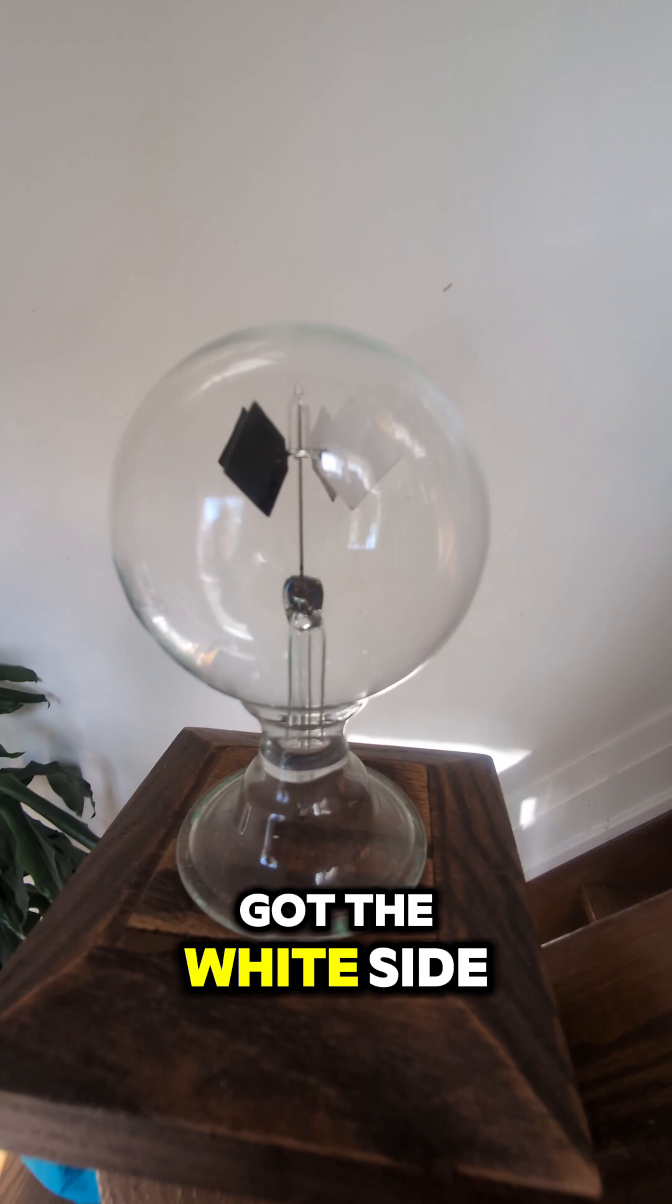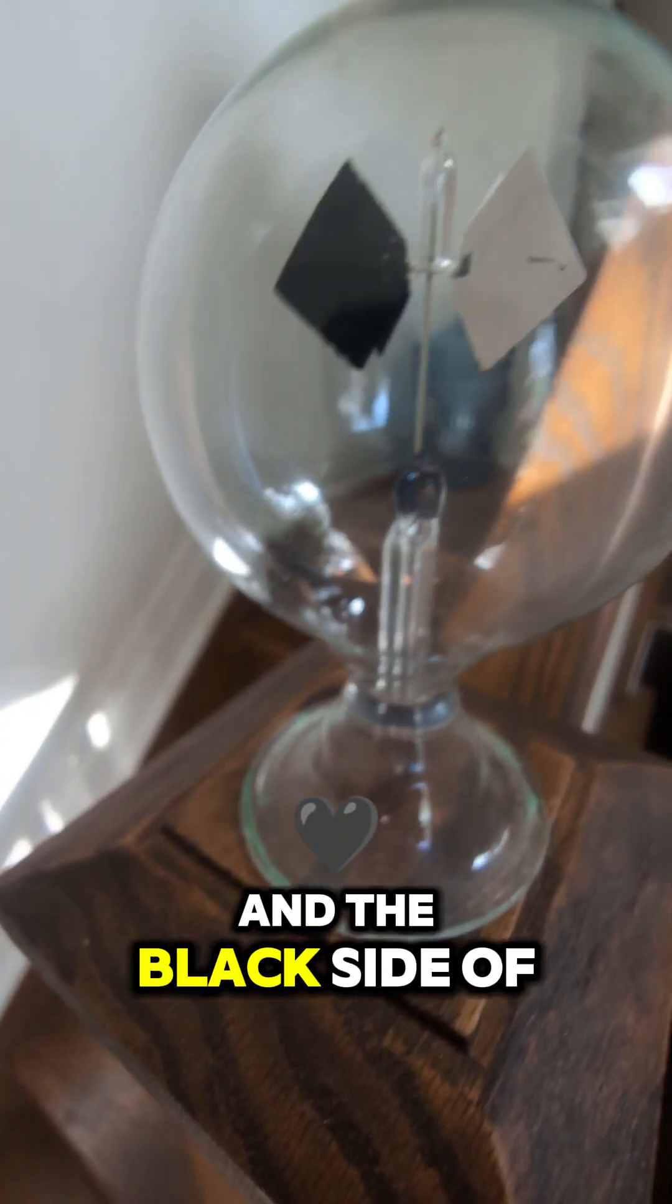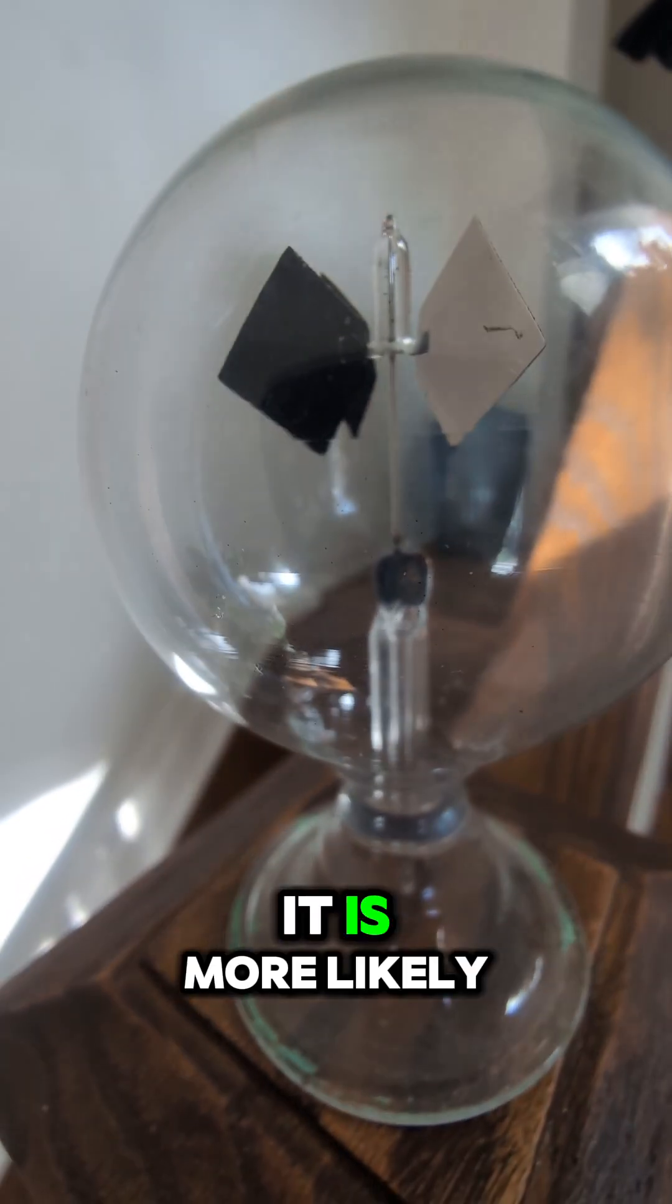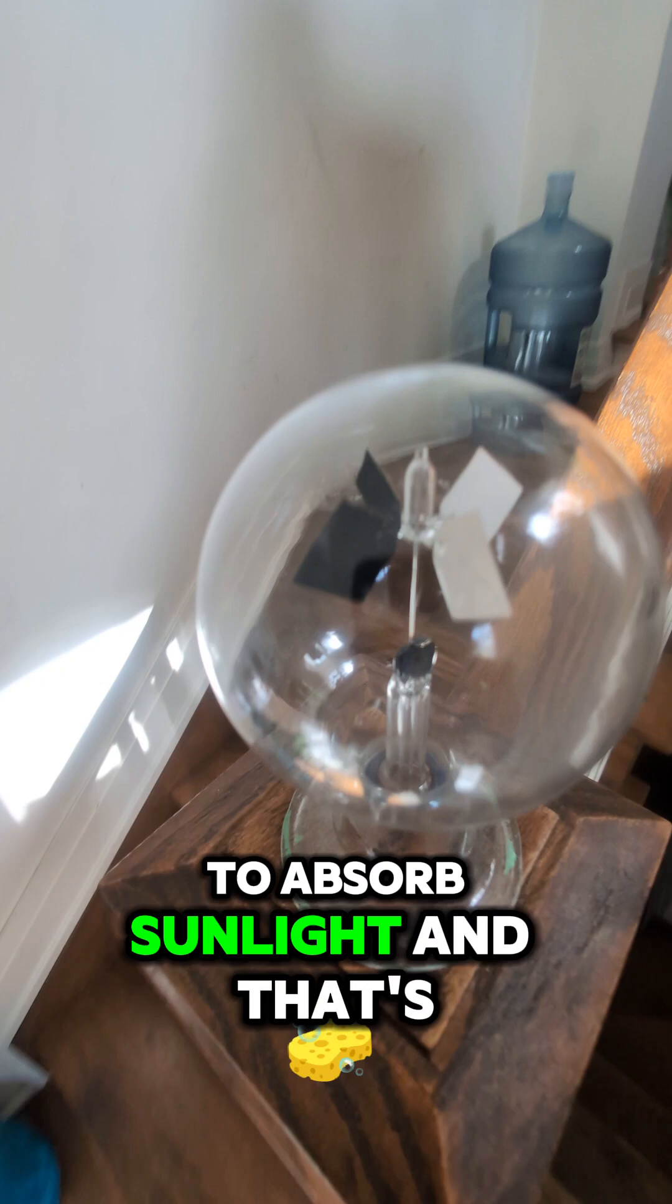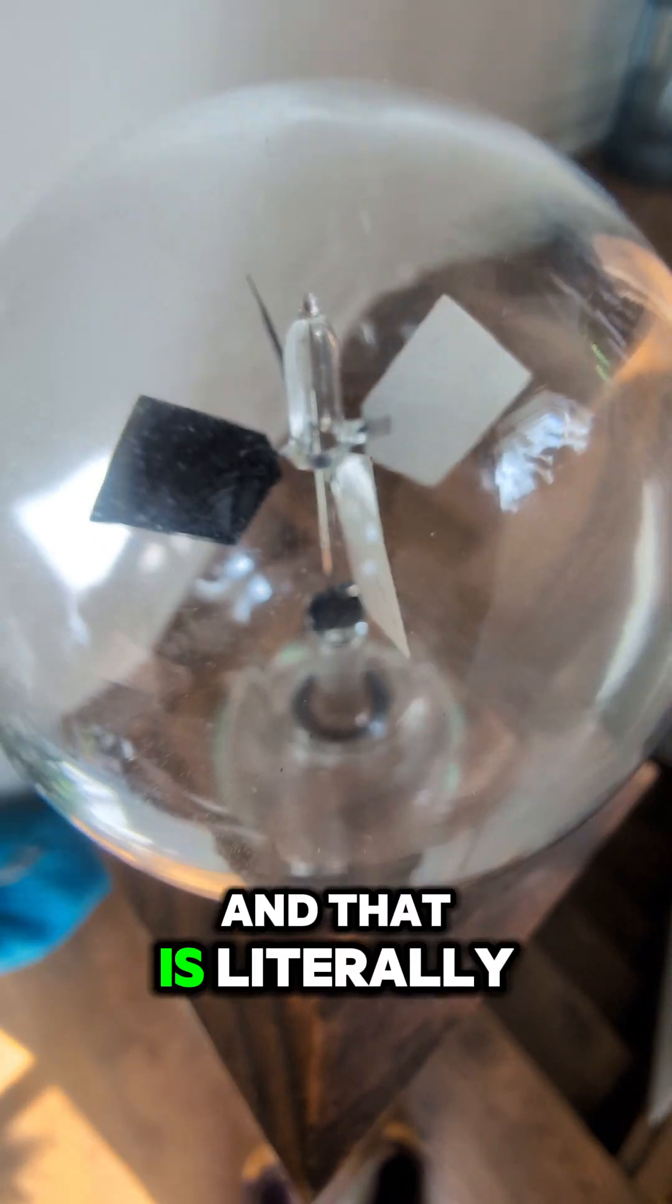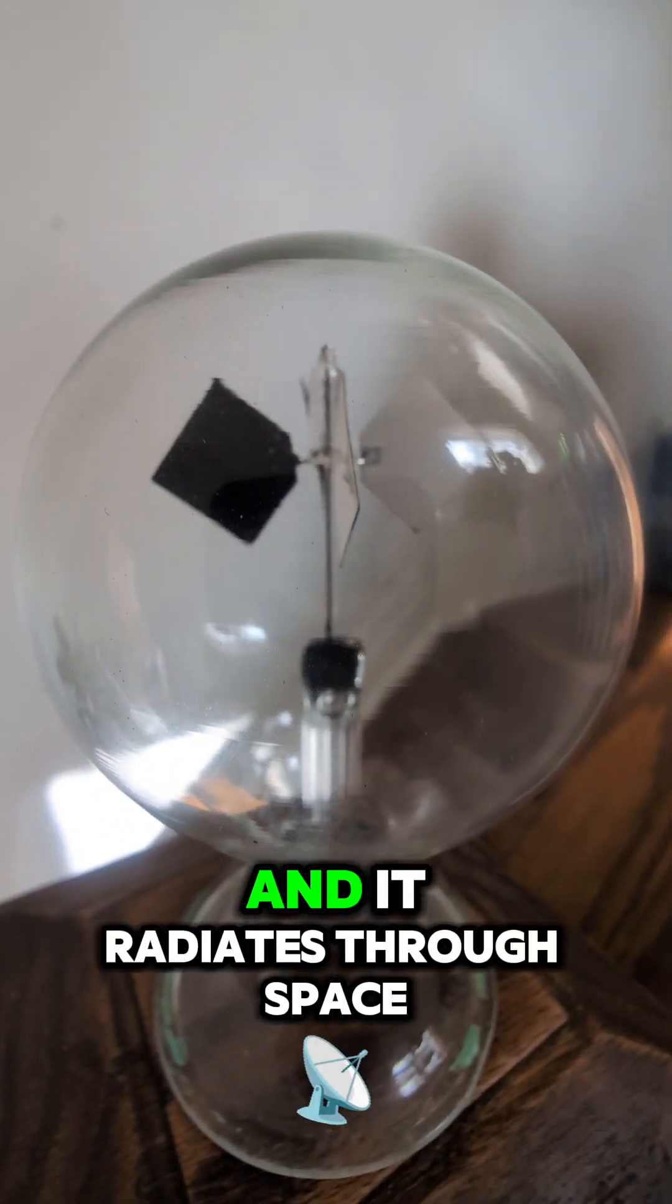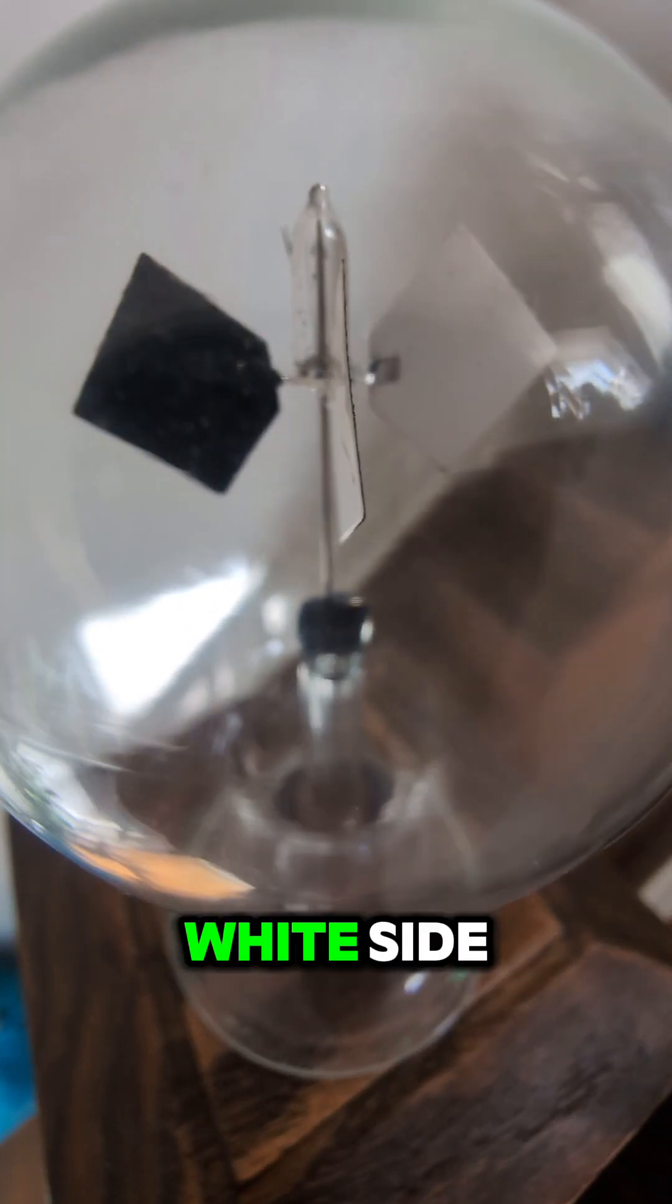Now, you know, you've got the white side and the black side, and the black side of the vane, as you can see, is more likely to absorb sunlight, and that's solar radiation. That is literally radiation, energy coming from the sun, and it radiates through space, and it heats up the black side more than it heats up the white side.